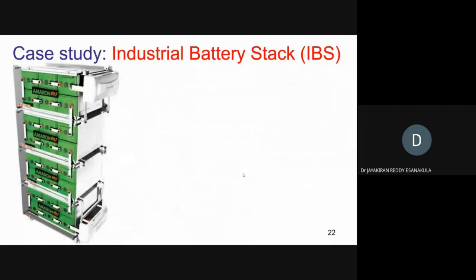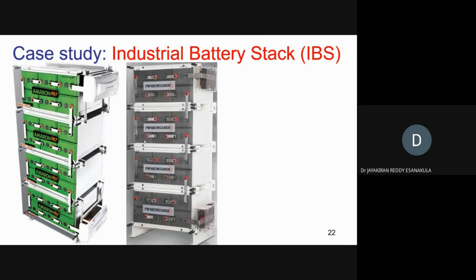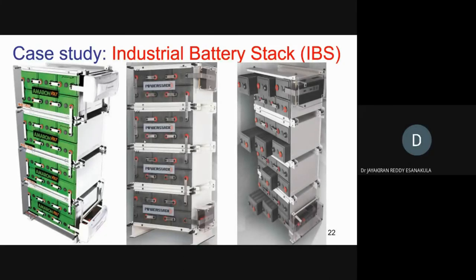On the left, the green-colored items are the cells manufactured by the battery company. They are interlinked with connectors — the red color is the positive of one cell, black is the negative of another, connected with a connector. The white-colored things are all connectors, meaning all batteries are connected in series. The task given to me was to have a CAD model of a complete stack with all interlinked connections.